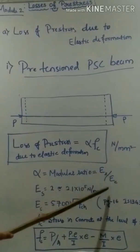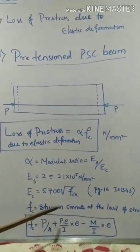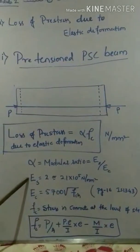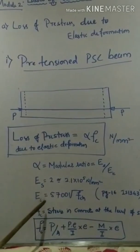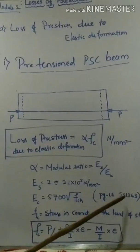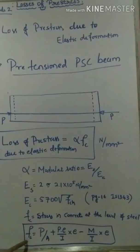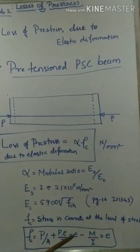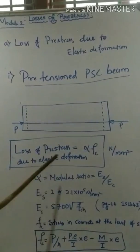The loss of pre-stress due to elastic deformation is given by alpha × Fc, where alpha is the modular ratio calculated as Es / Ec, and Fc is the stress in concrete at the level of steel. If Es is not given, take 2 × 10⁵ N/mm². If Ec is not given, use 5700 × √fck as per IS 1343 Clause 16. The stress in concrete at the level of steel is: Fc = P/A + P·e²/I.